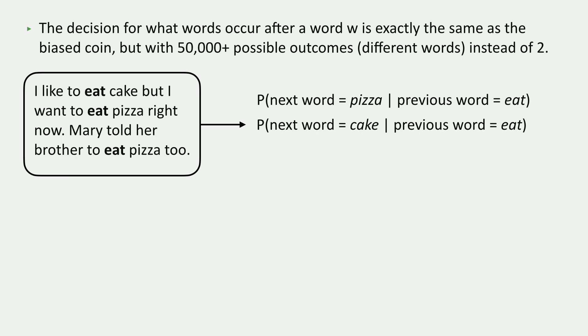Well, we see two, right? So just like in the flipping the coin thing, we get a probability of two-thirds out of three times we saw eat, two of them were followed by pizza, and then one of them was followed by cake. And everything else has probability zero.